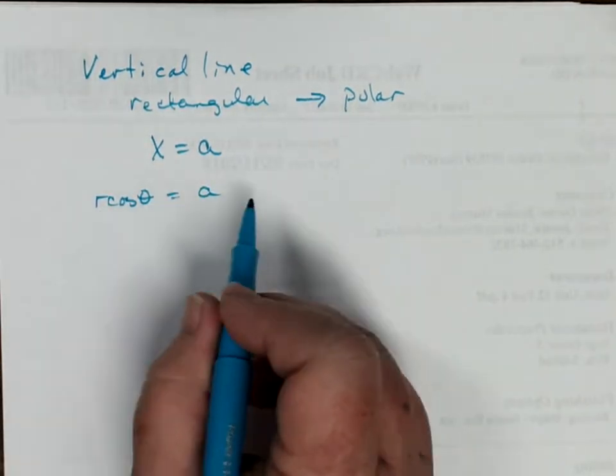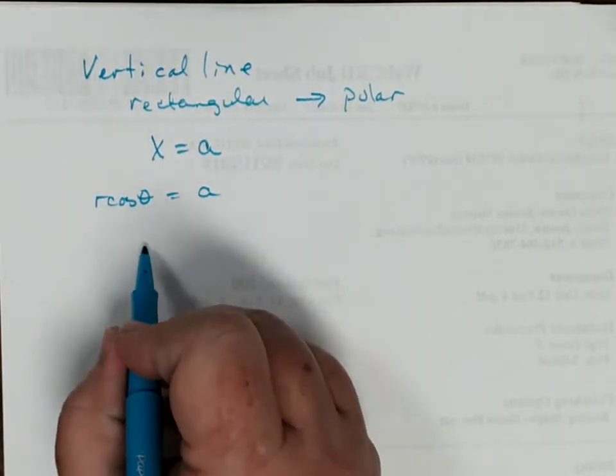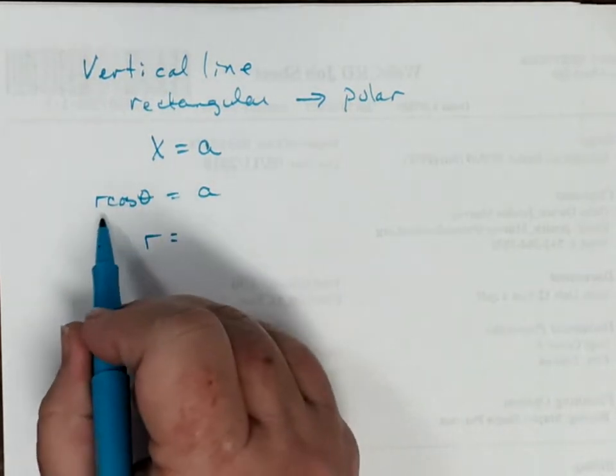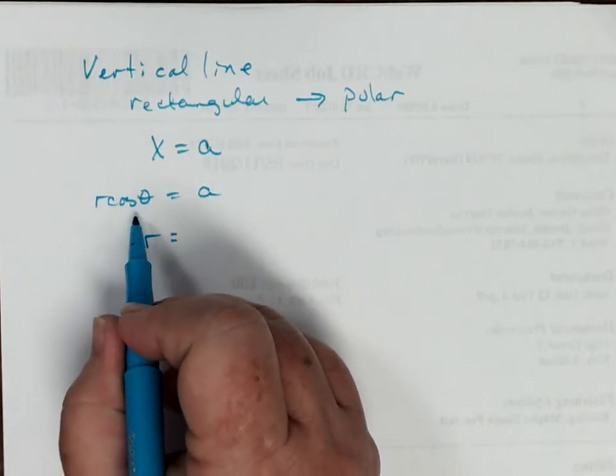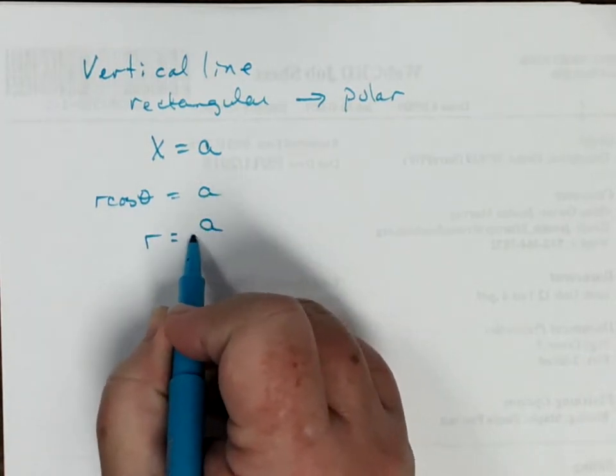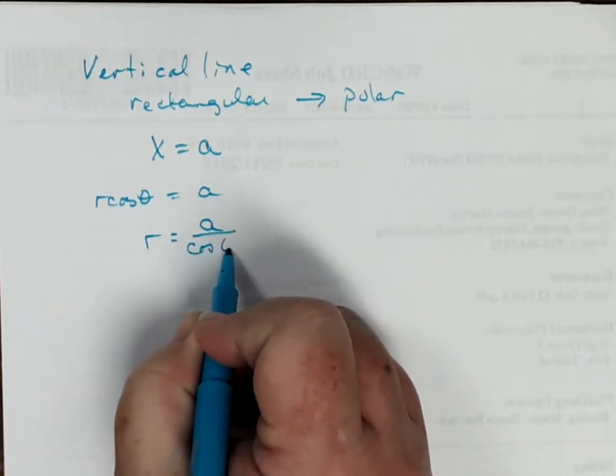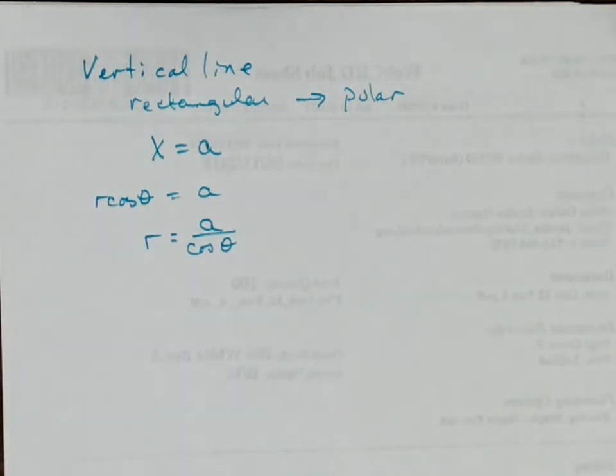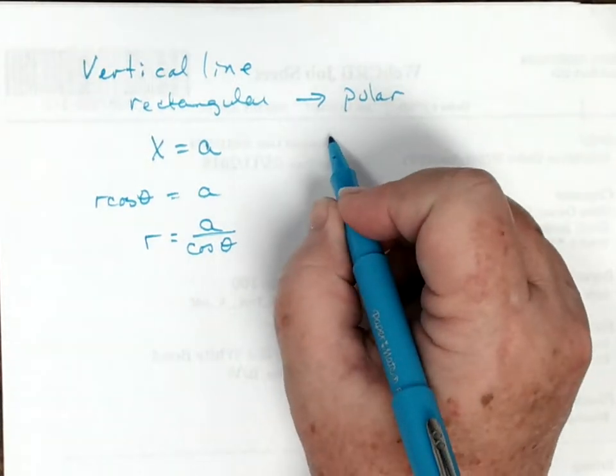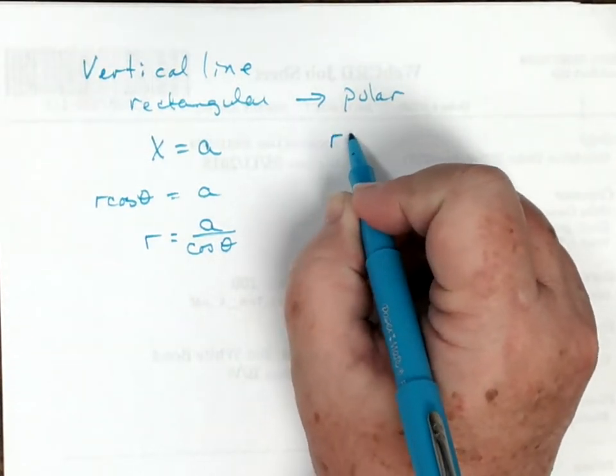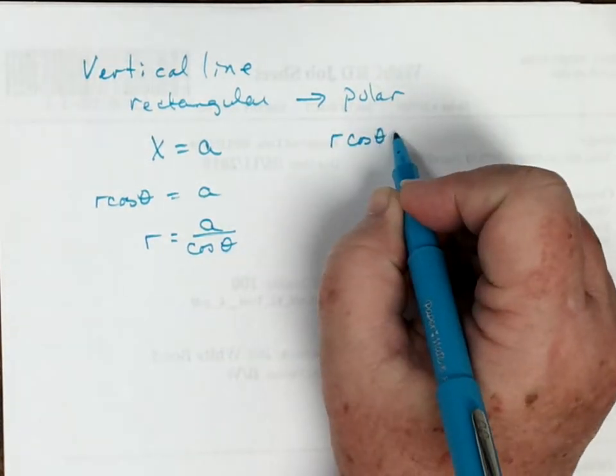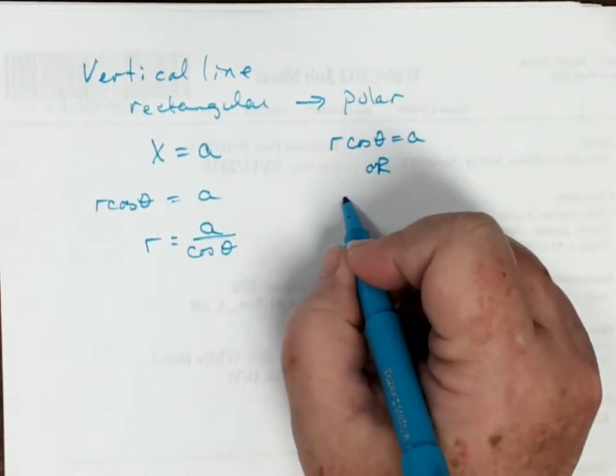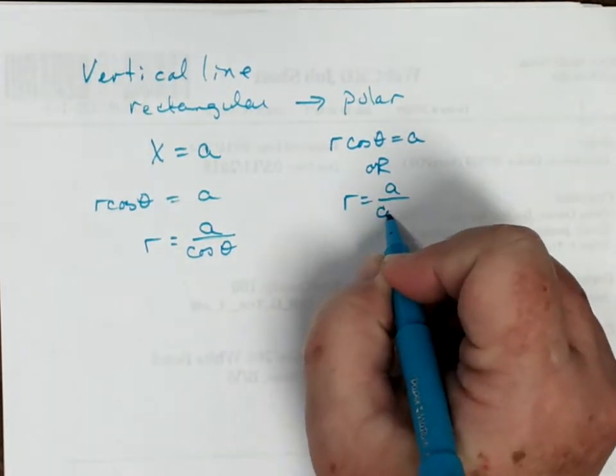If I wanted to graph it in polar form, I would have to isolate the r. So how do I isolate r? r is multiplied by cosine of theta. So by taking a and dividing it by the cosine of theta, I can have a vertical line. So the polar form can either be written as r cosine theta equals a, or r equals a divided by cosine of theta.